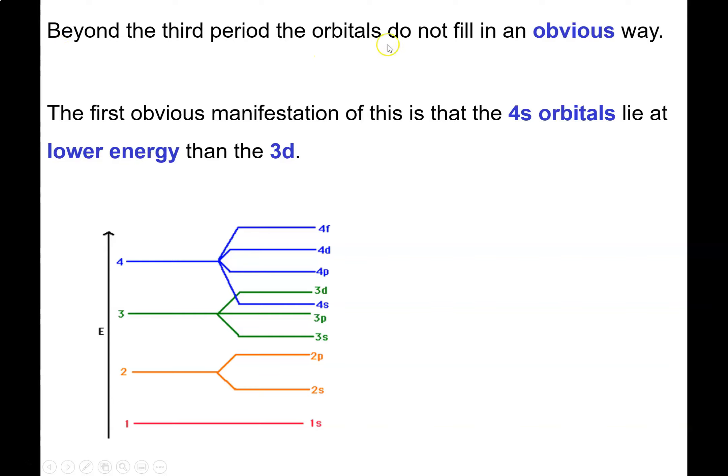Beyond the third period, orbitals don't fill in an obvious way. It's for that reason I mentioned before - because of the bunching up of our energy levels, our shell levels, when we put in the splitting into the subshells, things start getting muddled up. The real obvious one that we first see is that the 4S ends up coming below the 3D, which is completely non-intuitive.